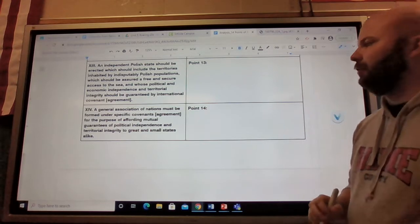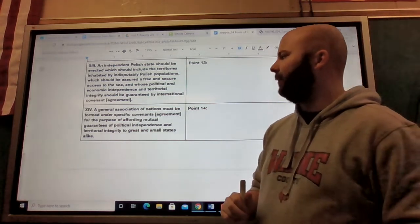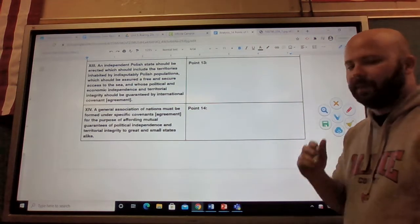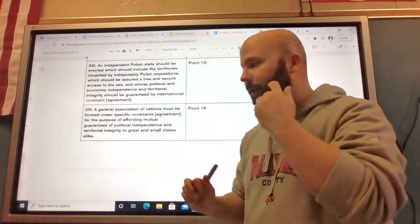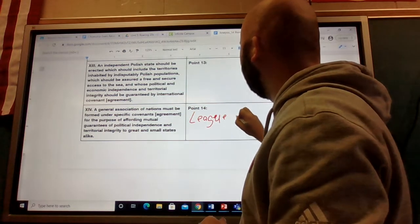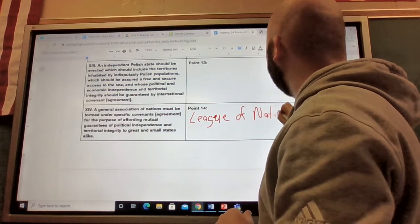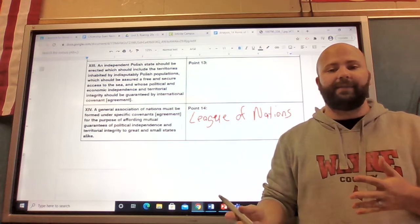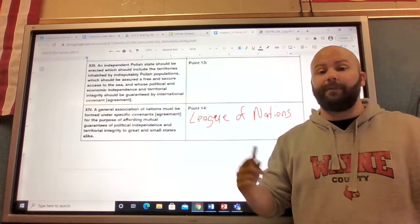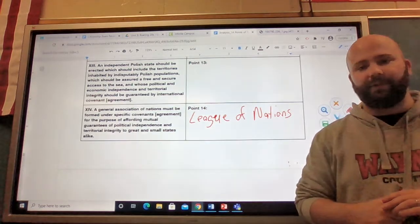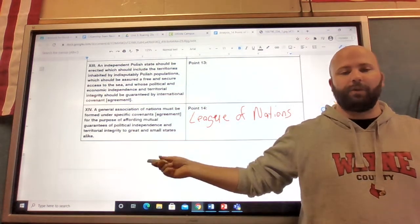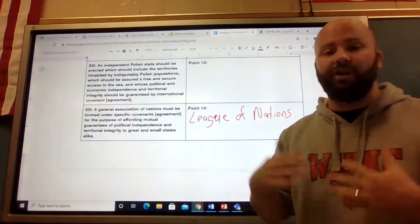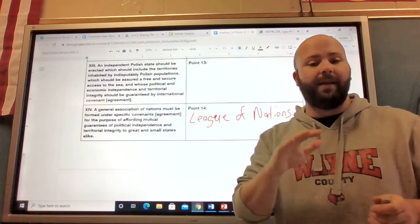Point 14: A general association of nations must be formed under specific covenants or agreements for the purpose of affording mutual guarantees of political independence and territorial integrity to great and small states alike. This is him calling for that thing we've been talking about: the League of Nations. This is going to be the League of Nations. Unfortunately, as we're going to see this week, the United States is never actually going to join the League of Nations. That's Wilson's dream, this international organization that settles disputes between different countries to prevent wars like this from happening.